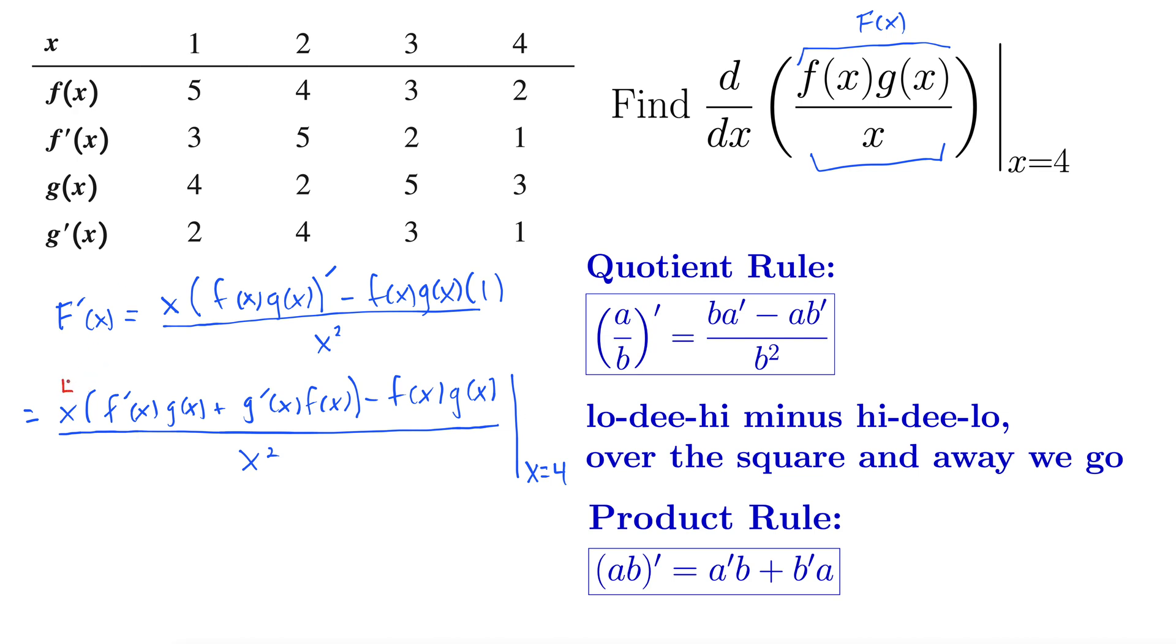So x is 4, f prime of 4, so now I'm finding f prime of x I'm going over to 4 so it's 1. f prime of 4 must be 1 so we have 1 here times g of 4, g of 4 is 3. Plus g prime of 4, g prime of 4 is 1 times f of 4 which is 2.